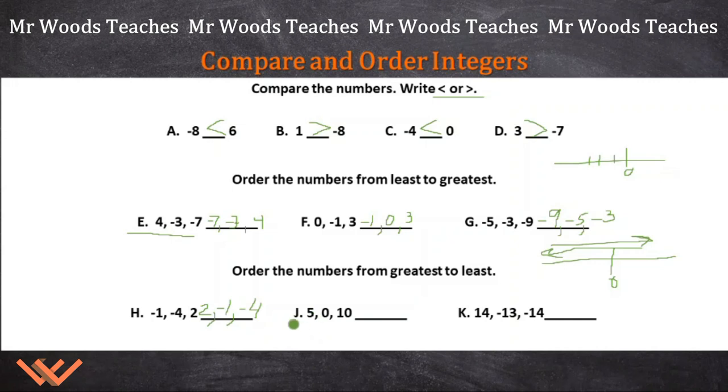Let's look here at J. 5, 0, and 10. Oh, well, 0 is definitely the least, but what's the greatest? Well, 10 is greater than 5, so that's what we're going to start with. So 10. Next up is 5. And then 0.